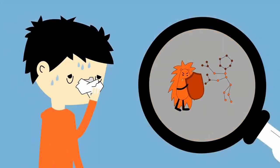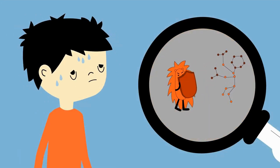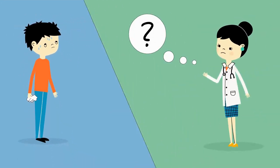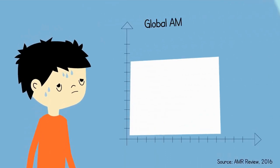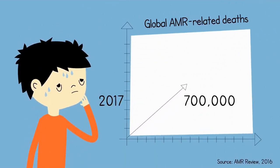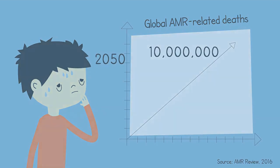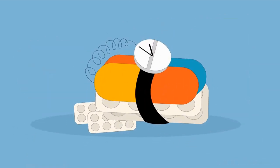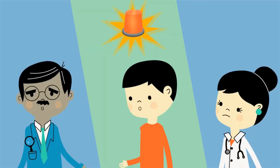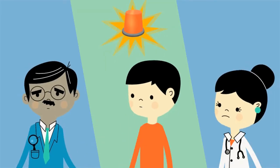AMR occurs when microbes become resistant to antimicrobial drugs, leading to ineffective treatments and persistent infections. We all have a role to play in reducing the amount of pharmaceuticals in the environment. It is important that we understand the impact of pharmaceutical pollution and demand that governments act to ensure pharmaceutical companies clean up their production chains.